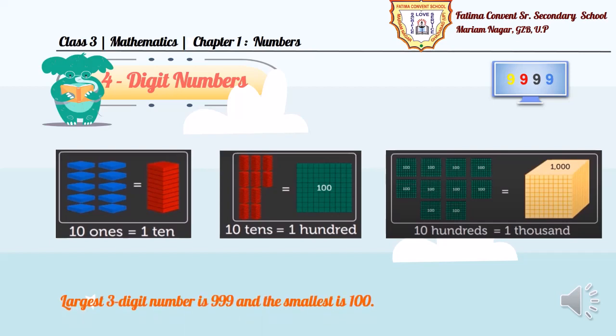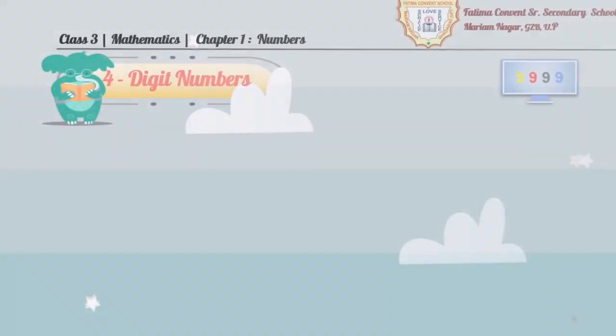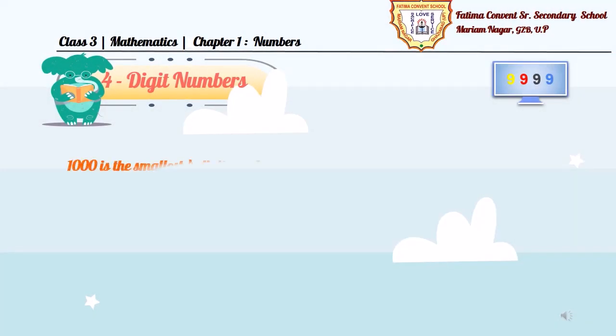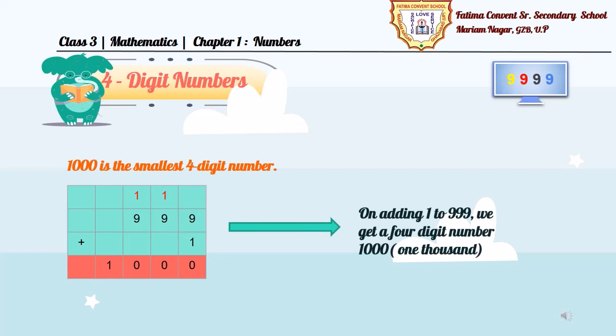Children, you already know, largest 3-digit number is 999 and the smallest is 100. 1000 is the smallest 4-digit number. As you see in the addition table here, on adding 1 to 999, we get a 4-digit number 1000.